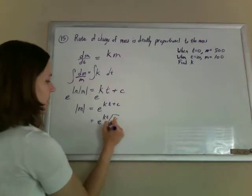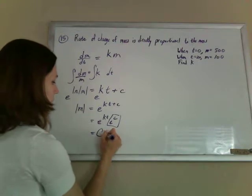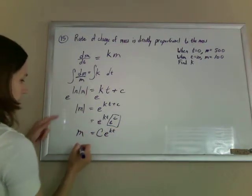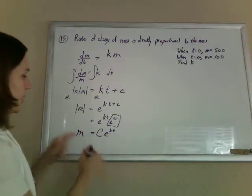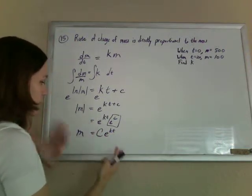And this e to the c, if I just rename this as a super constant c, we have m equals c e to the kt. And I can dump the absolute value because that c could be either positive or negative, and that will kind of absorb that.